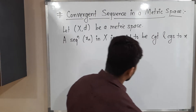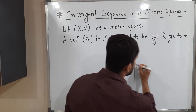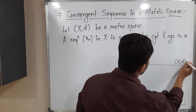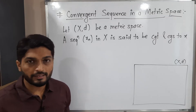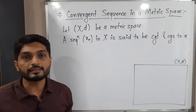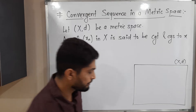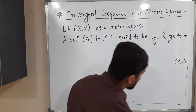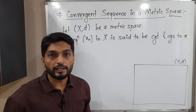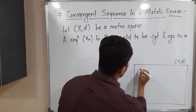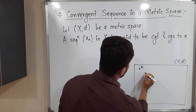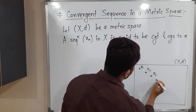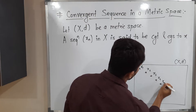We have considered a metric space — let me denote it as (X, d), where X is a non-empty set and d is a distance or metric which satisfies four conditions. We have also considered a sequence X_m. A sequence has infinitely many terms; I am showing a few of them here: X1, X2, X3, X4, X5, and so on.